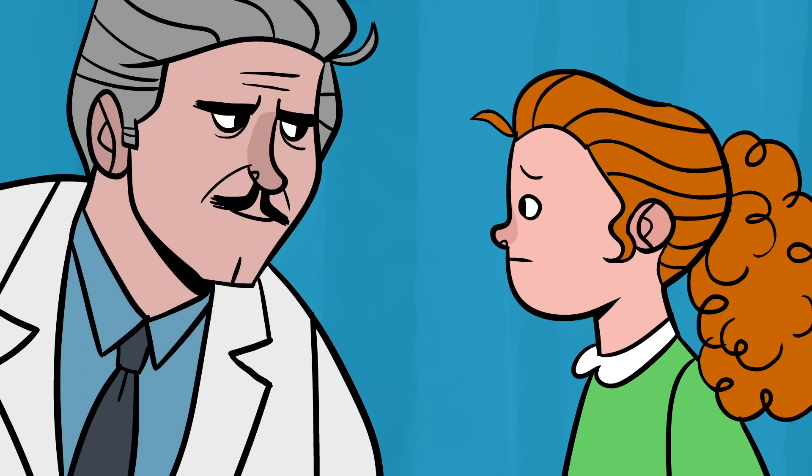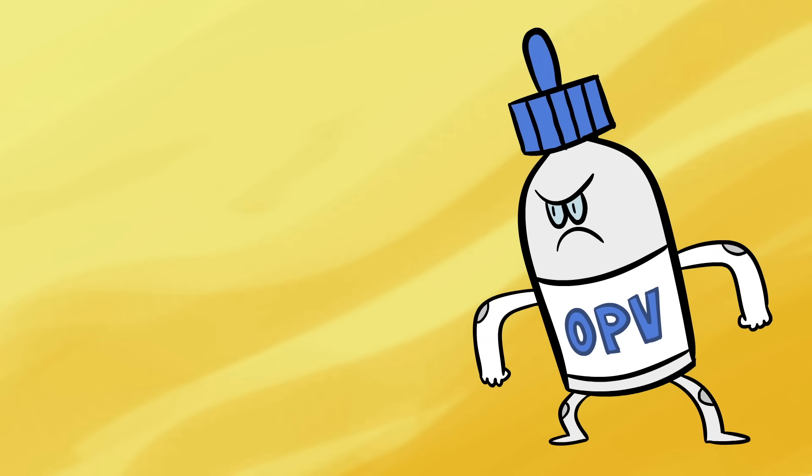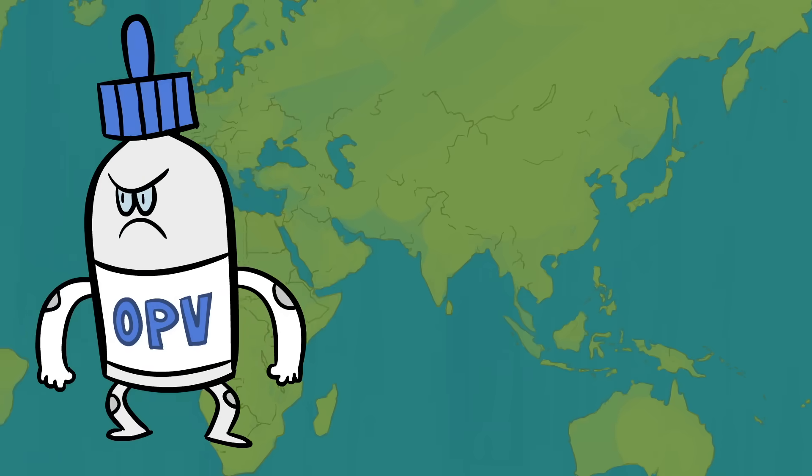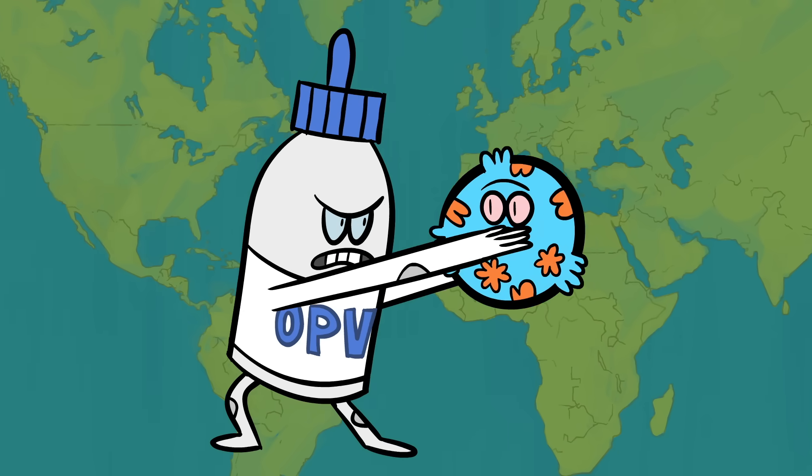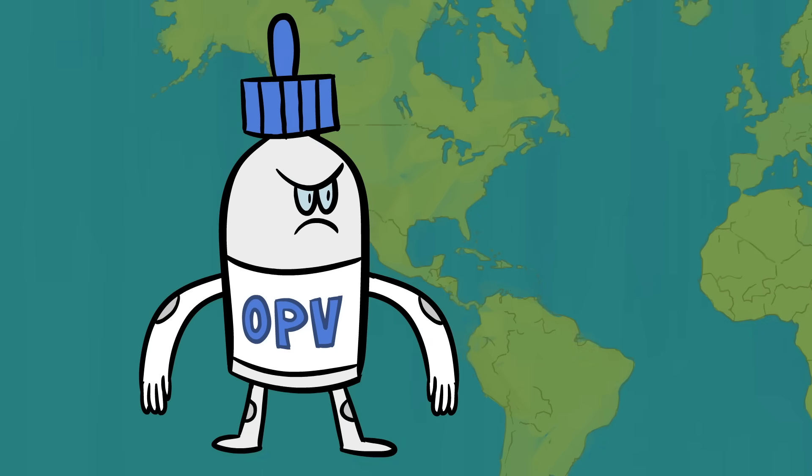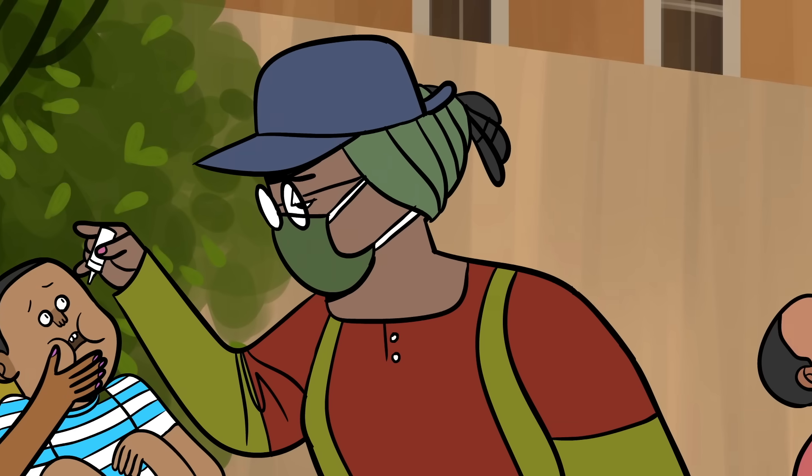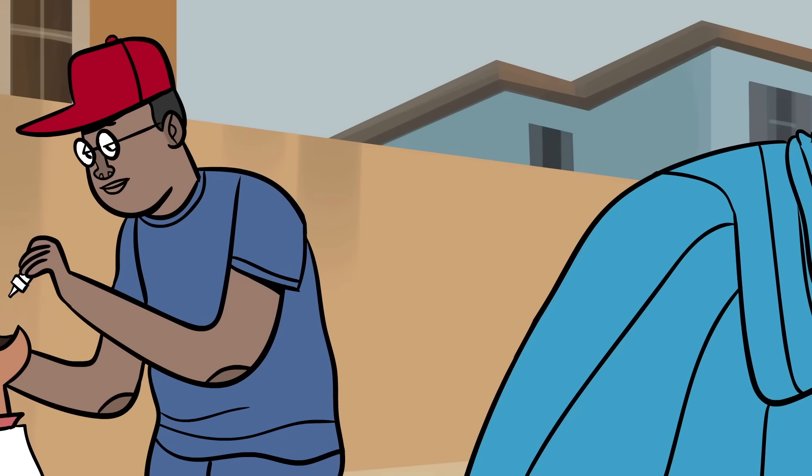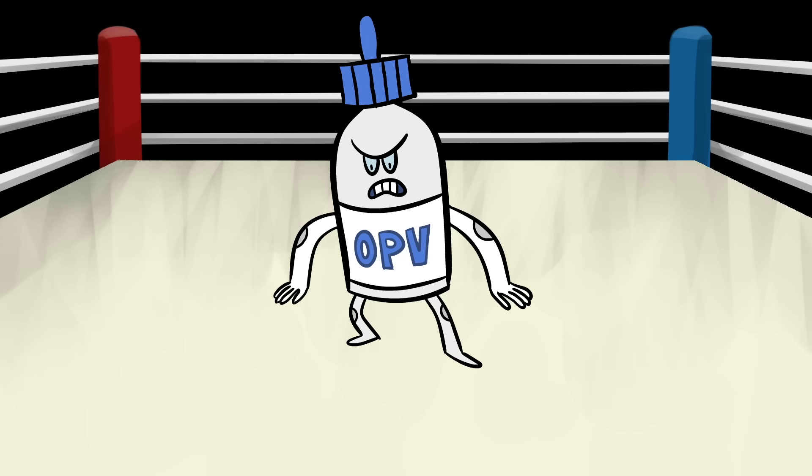To be clear, this didn't mean the attenuated vaccine was inherently dangerous. In this case, OPV had already been used to stop wild poliovirus type 2 worldwide and eradicate all wild poliovirus from the Americas, West Pacific, and countless other countries. The issue was ensuring populations met a certain vaccination threshold. Specifically, at least 80% of every community needed to be vaccinated to prevent strains from mutating.